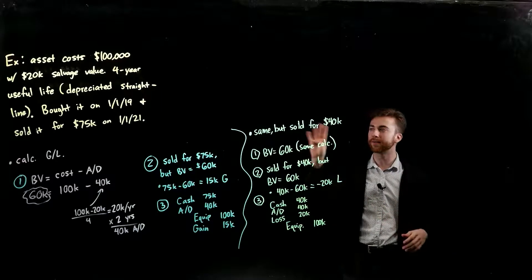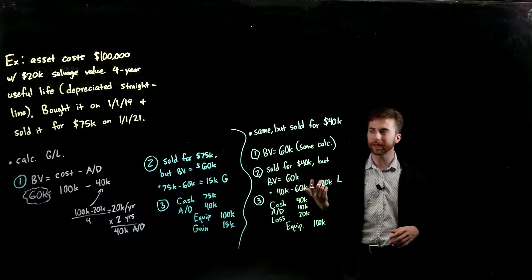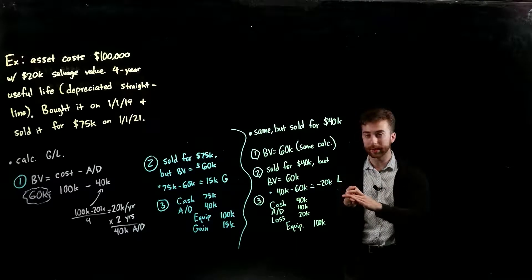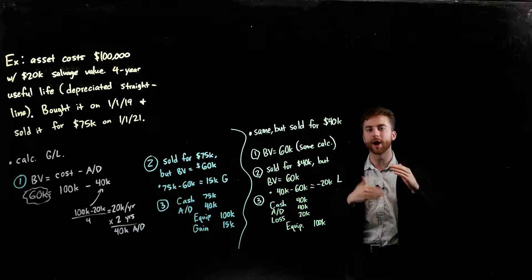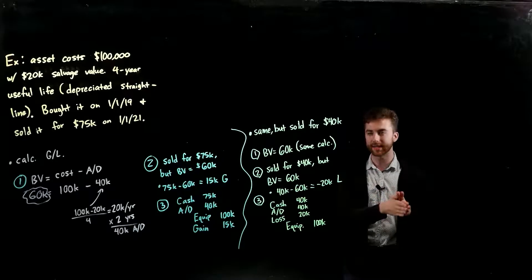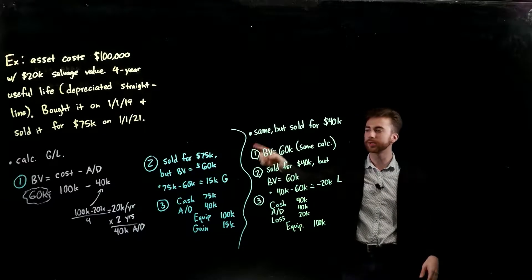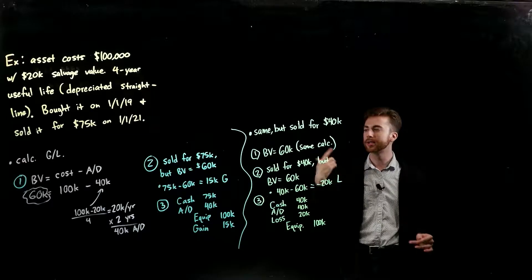We bought it on 1-1-2019 and we sold it for $75,000 on 1-1-21. You can see that even though it's a four year useful life, we only held onto it from 1-1-2019 to 1-1-2021, so it's two years of depreciation we've recorded before we sell it. First, we're just trying to calculate the gain or loss.